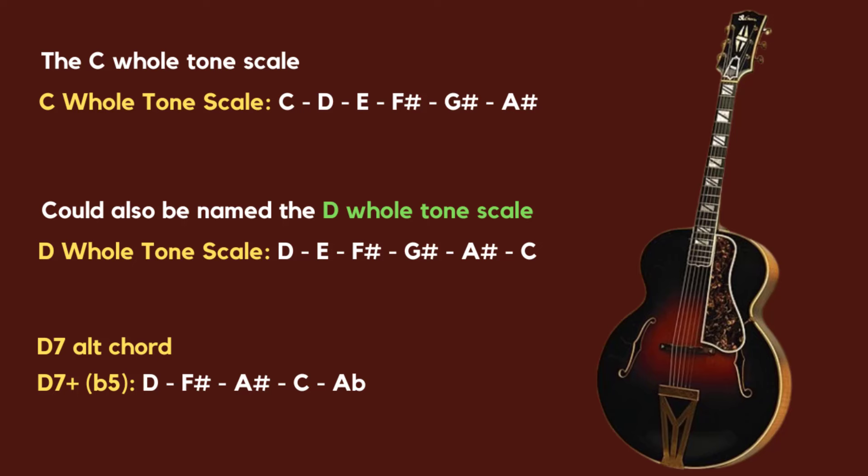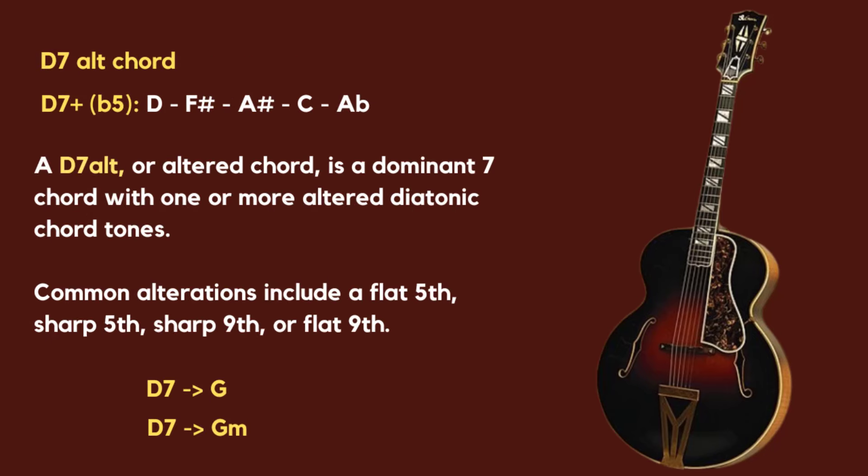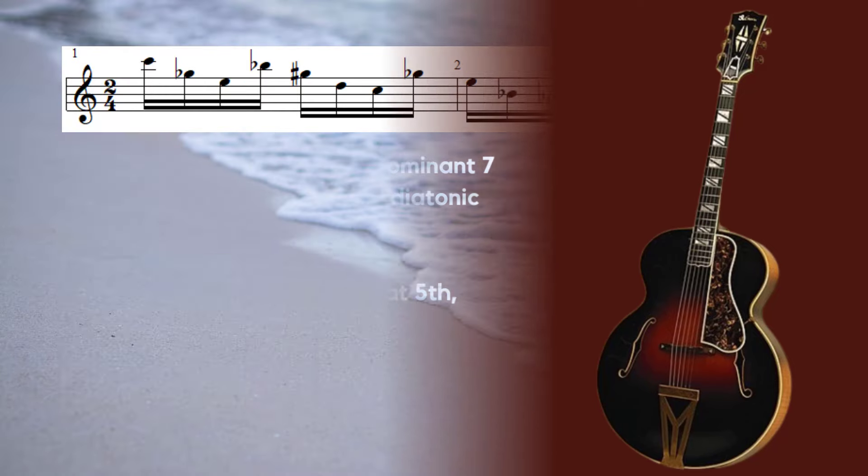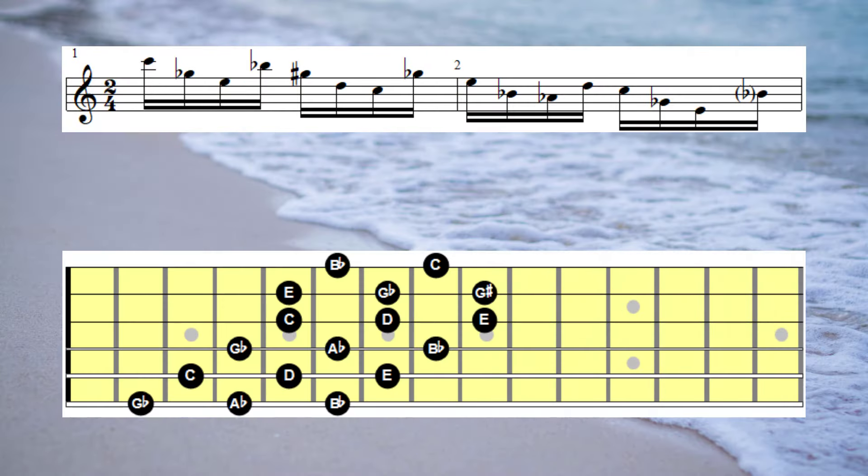For example, I could think of this run, this whole tone run that we're creating, I could think of it as a D seventh altered run. So instead of finishing on an F chord, I could finish on a G major or G minor chord. And my thinking there is that D seventh would normally resolve to G. Okay, let's have a listen to that idea. I'm going to play that same run, only this time finishing on G minor six.